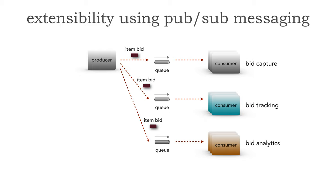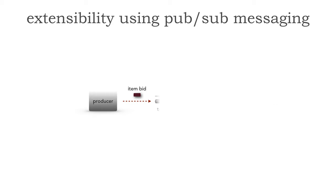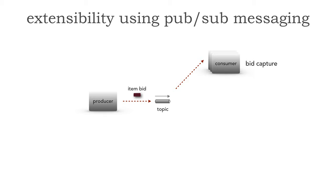Let's see how we can leverage PubSub messaging using topics to avoid this kind of change and provide architectural extensibility. We have the same producer, now sending item bids not to a queue, but to a topic in a broadcast format. We have a bid capture service, which would be a durable subscriber, now subscribing to that topic — meaning if that bid capture service goes down, those messages are still contained in the topic until that subscriber comes back up.